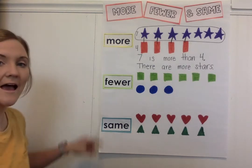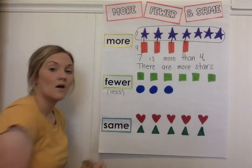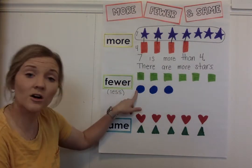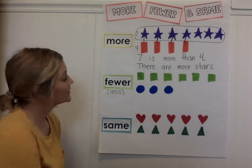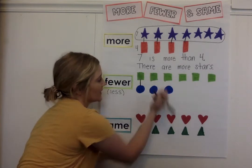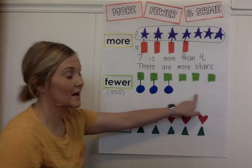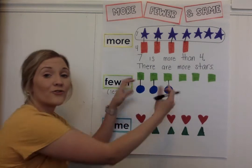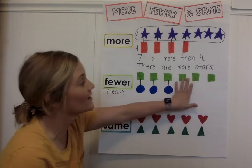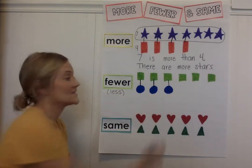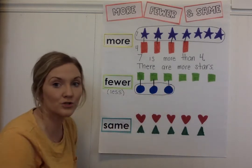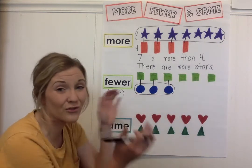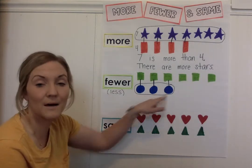Our next word is fewer, which can also be called less — fewer and less mean the same thing. So we're going to decide: are there fewer green squares or fewer blue circles? We're going to buddy them up. These guys are buddies, these guys are buddies, these guys are buddies. Are there any more circles to be buddies with the green squares? No, there's not enough blue circles. There are fewer blue circles because there's not enough of them to give every green square a buddy. The blue circles all have a buddy, but there are so many green squares left without buddies — so there's a smaller amount of circles. This is how we're always going to compare: by giving them buddies.